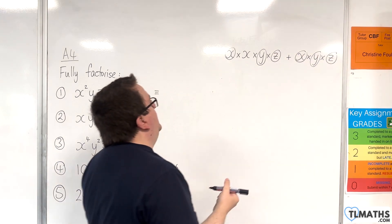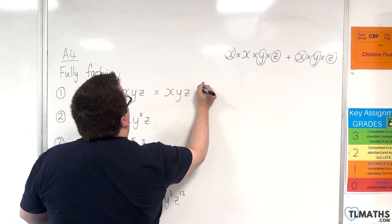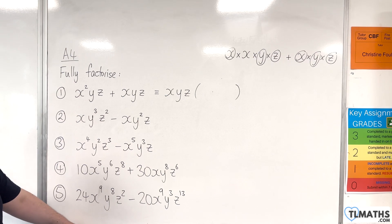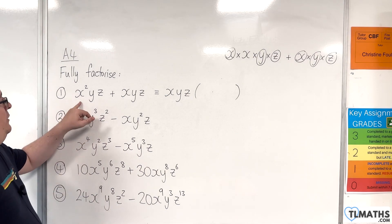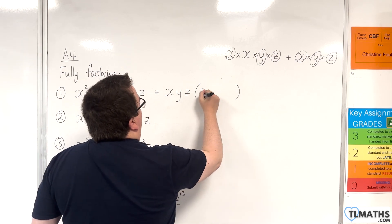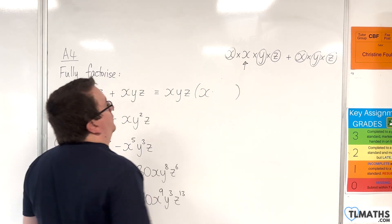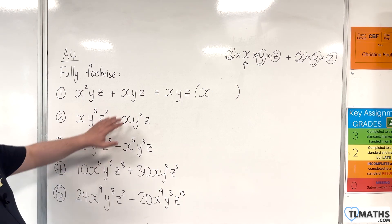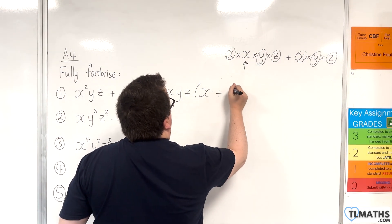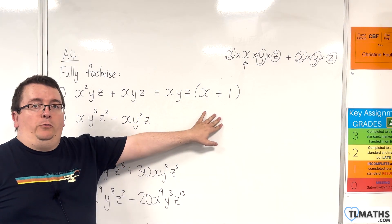So I can factor xyz out of a single bracket. Now x squared yz divided by xyz will just be x — that's given by the fact that I've just got that single x left over. And then xyz divided by xyz is one. So this factorises to xyz(x + 1).